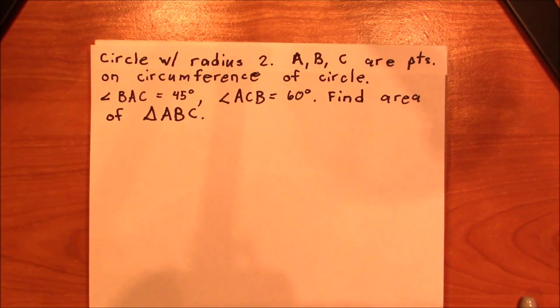All right, so the question wants us to find the area of a triangle within a circle. Specifically, we have a circle with radius 2, where points A, B, and C are on the circumference of the circle. The angle BAC equals 45 degrees, and the angle ACB equals 60 degrees. Find the area of triangle ABC.